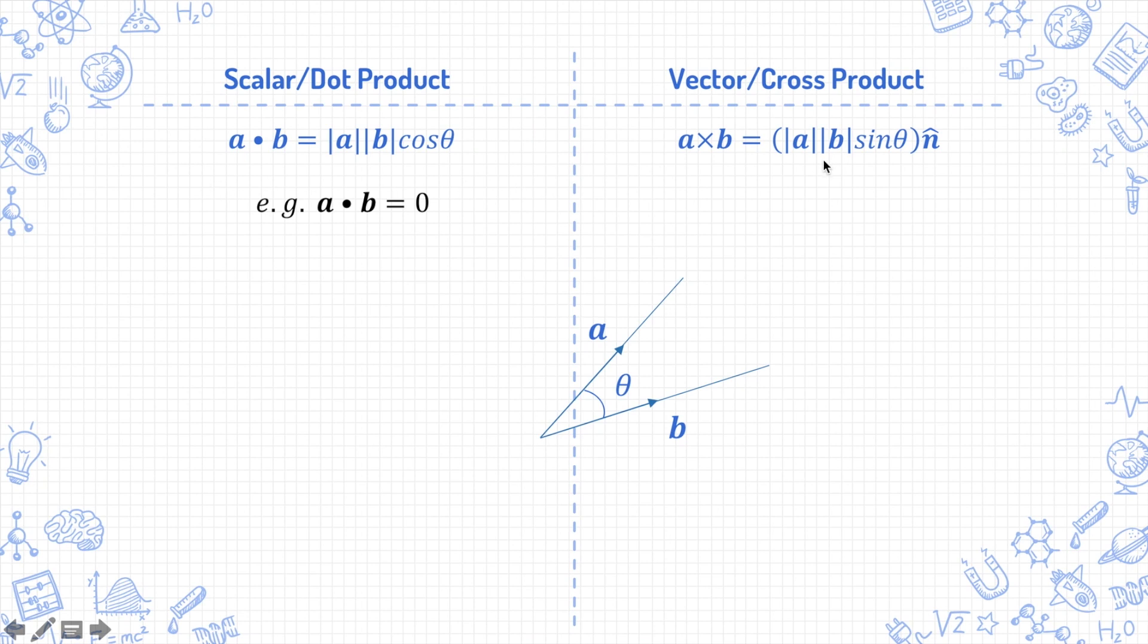the cross product looks quite different. There is this n cap here, which is the unit vector normal to both a and b. Normal is another word for perpendicular. When you cross two vectors a and b, the result is another vector which is normal to both a and b. In this diagram, if a and b are in the plane of your screen, the direction of the cross product will be in the direction of an arrow that is shooting directly into the screen or out of the screen.